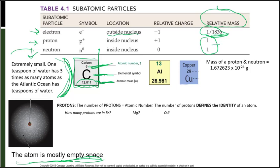Notice we say relative mass. We count one proton and one neutron as each having a mass of one, but the actual mass of a proton or neutron is 1.67 × 10⁻²⁴ grams — very, very small. To make it easier, we say that mass is equivalent to one, just because that number is so small.